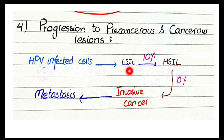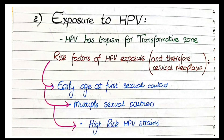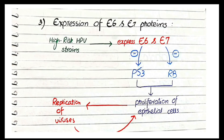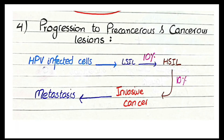In the next video we will discuss low-grade squamous intraepithelial lesion, high-grade squamous intraepithelial lesion, and invasive cancer in detail. Key points to remember: the concept of the transformation zone; that cervical neoplasia is due to exposure to HPV; that high-risk HPV strains release E6 and E7 proteins that inhibit tumor suppressor genes P53 and RB, resulting in rapid proliferation of epithelial cells; and that these proliferating cells of the transformation zone can develop into cervical dysplasia, precancerous lesions, and invasive carcinoma.